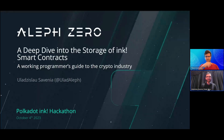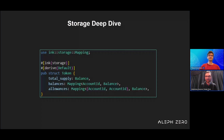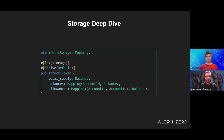Yesterday you had an introductory lecture with Piotr about ink! smart contracts. Here is a little code snippet with ink — hopefully it is familiar to you already. What's happening here is that we are defining storage for our smart contract in ink. We want to use the mapping, so we have this declaration of 'use ink storage mapping' at the top, then we declare that it is our storage above the structure and define our fields inside.